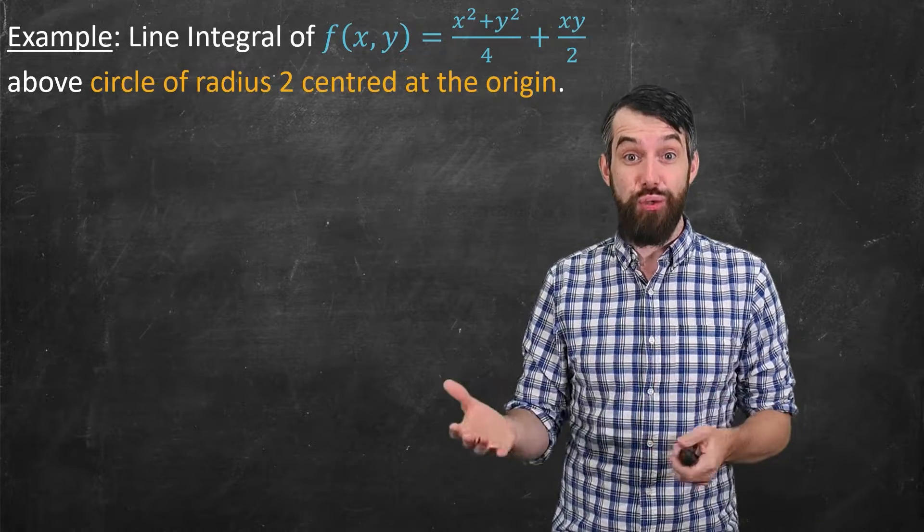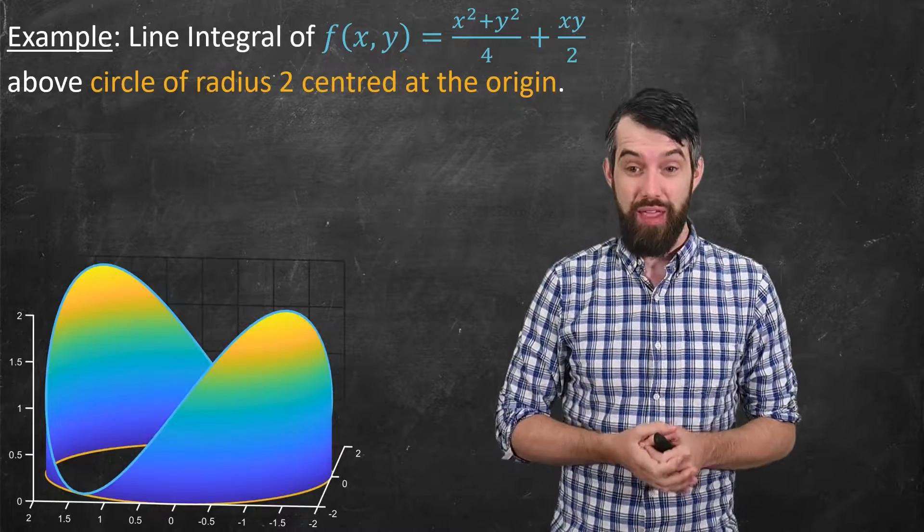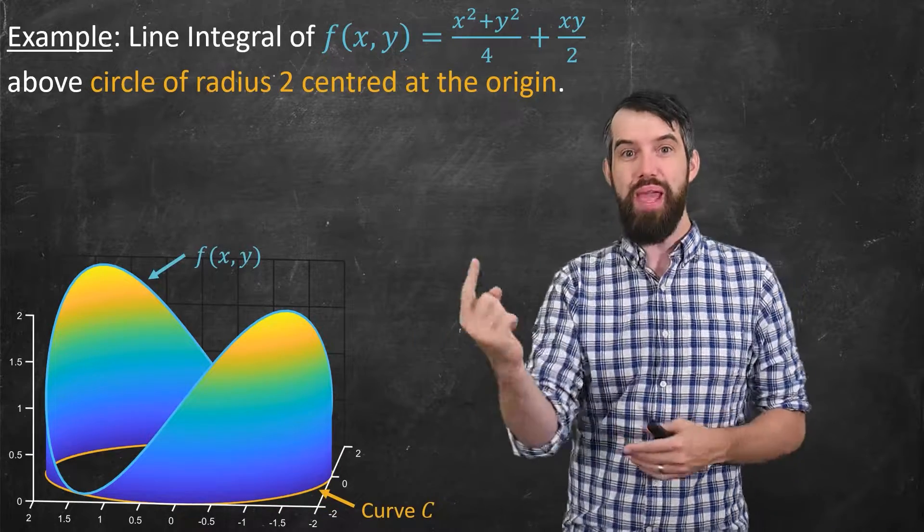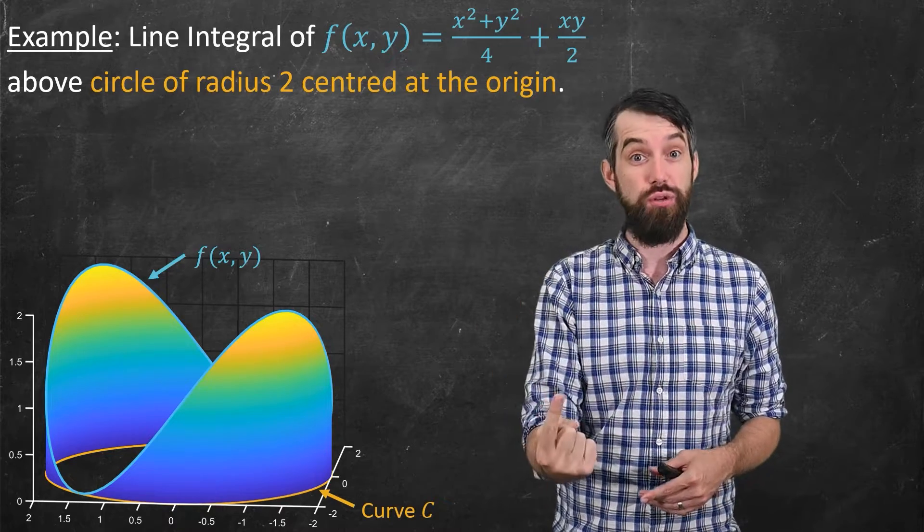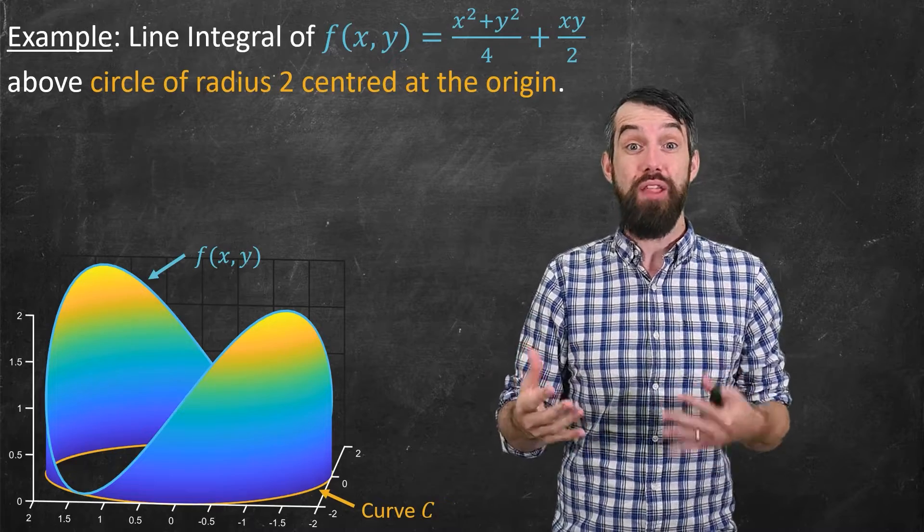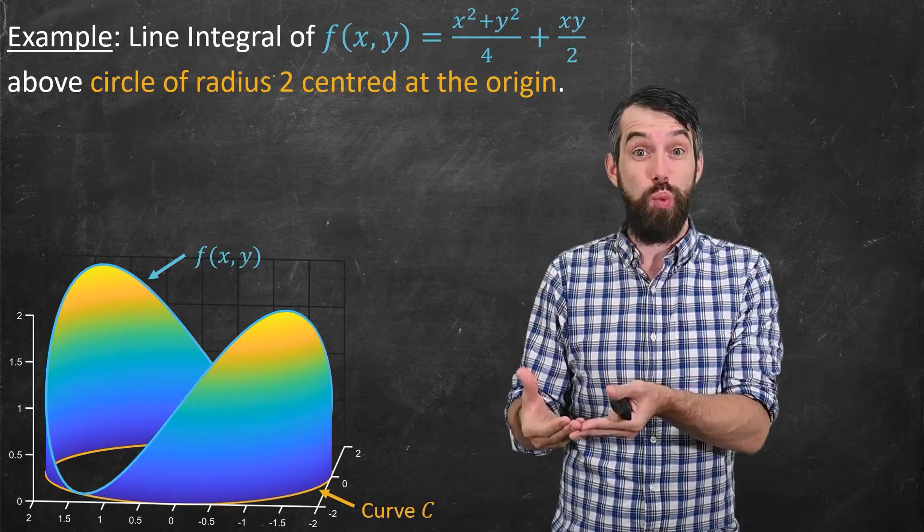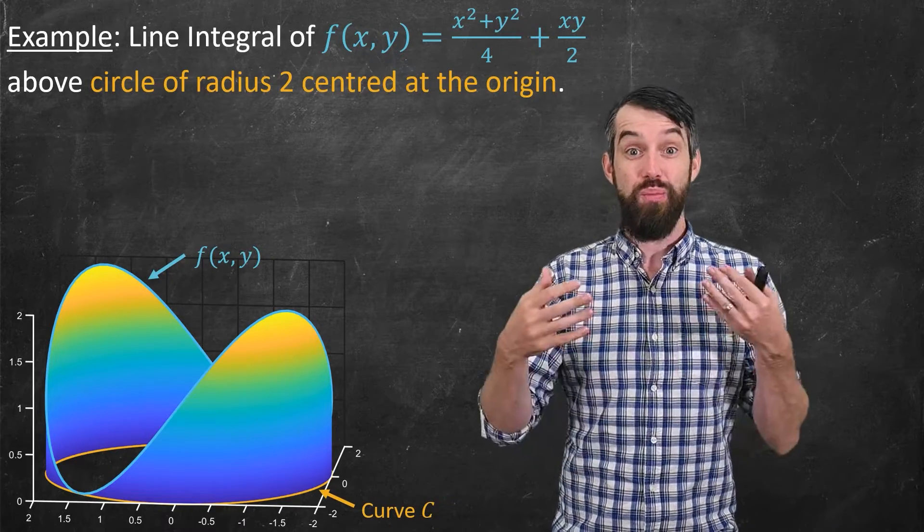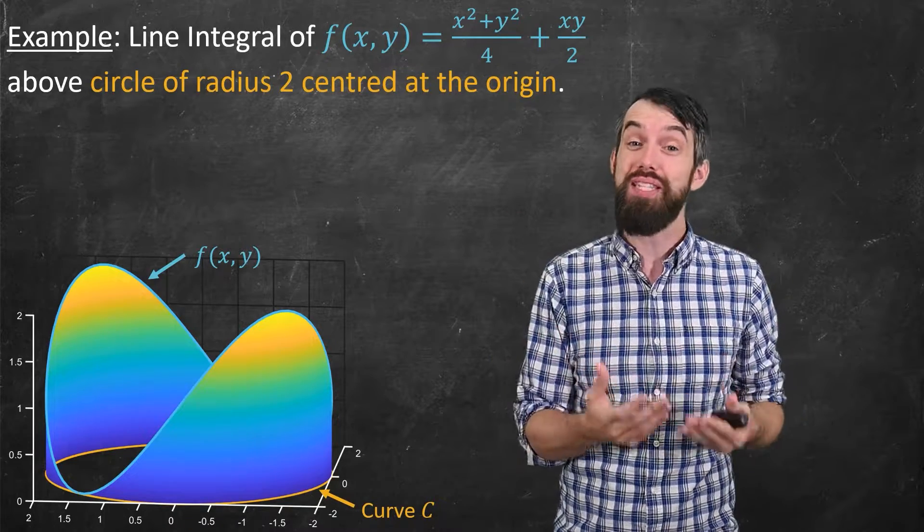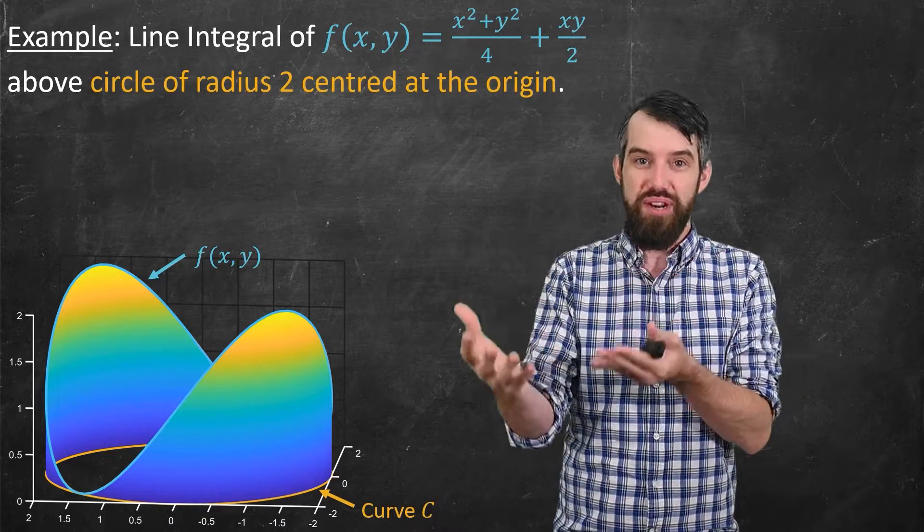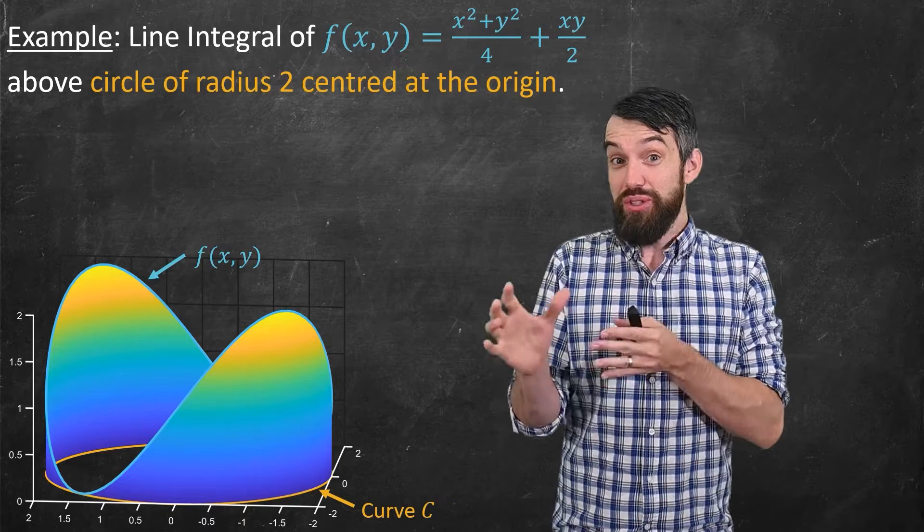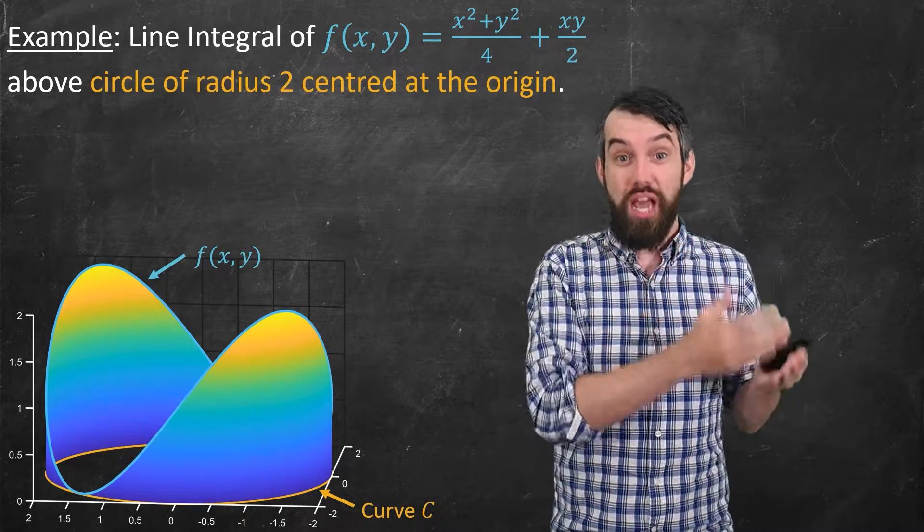What this looks like visually is something like this. Now, there's two things to point out here. First is along the bottom, we have that curve, which is our circle of radius 2 centered at the origin. And then the blue curve at the top describes the height of the function f above that curve. And then what I'm actually computing here, the line integral, what it represents in this example is the surface area underneath that function going down to the curve. And indeed, this picture is the same picture I used in the introduction video.